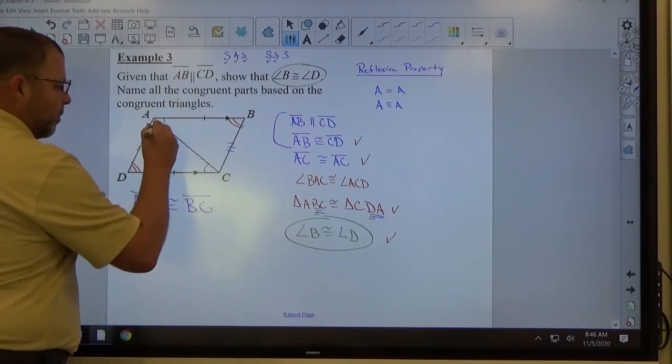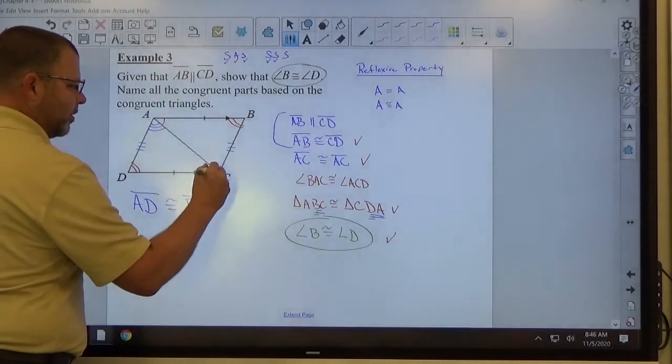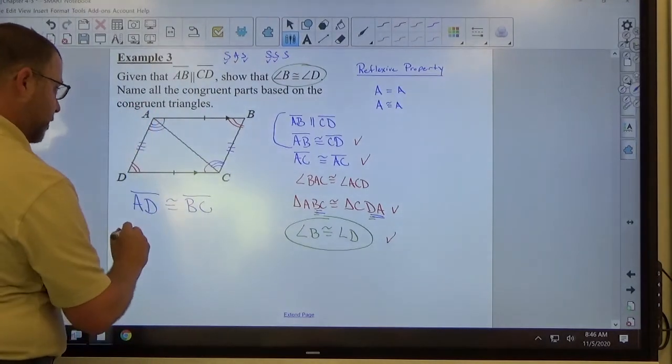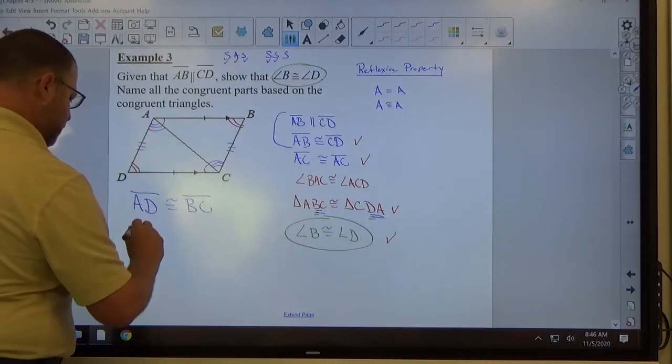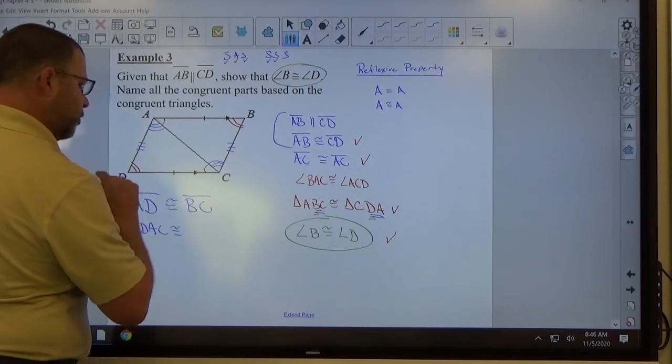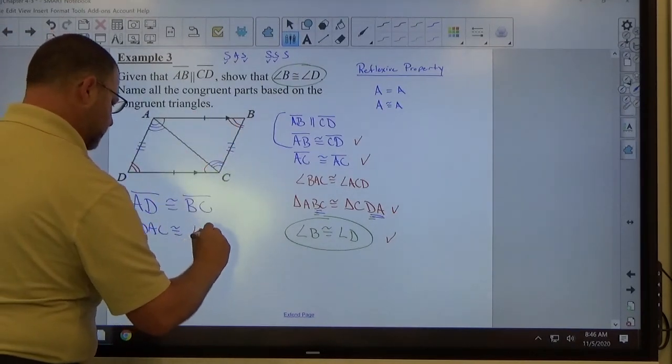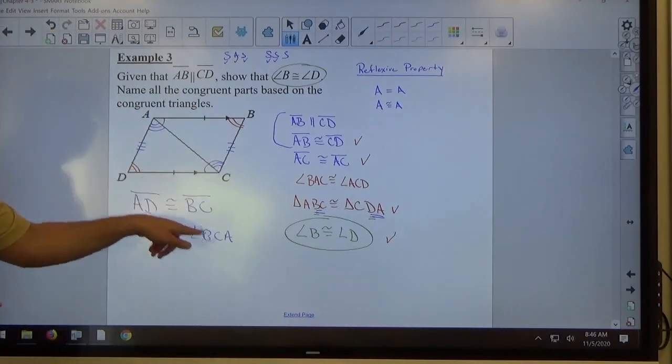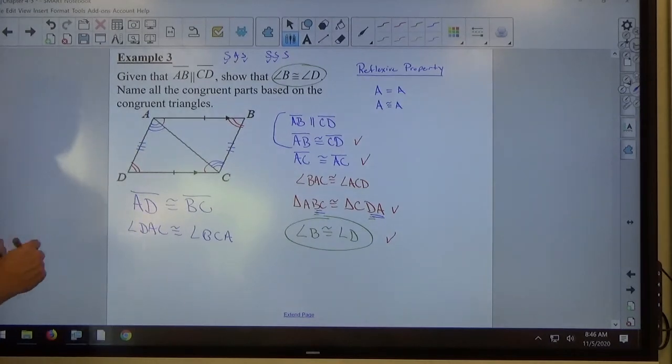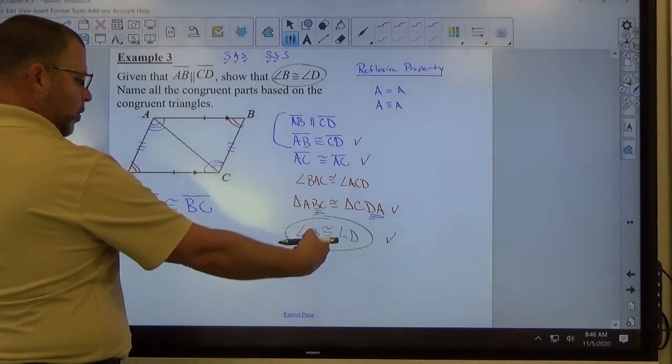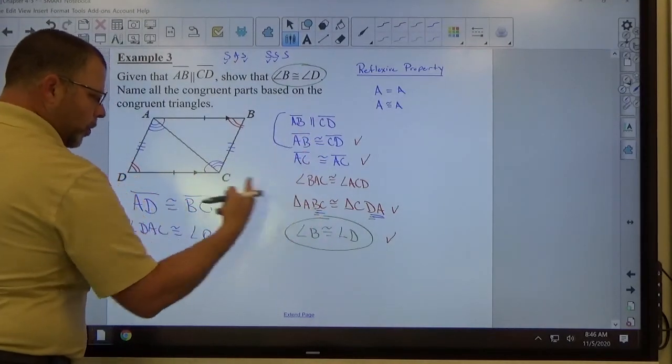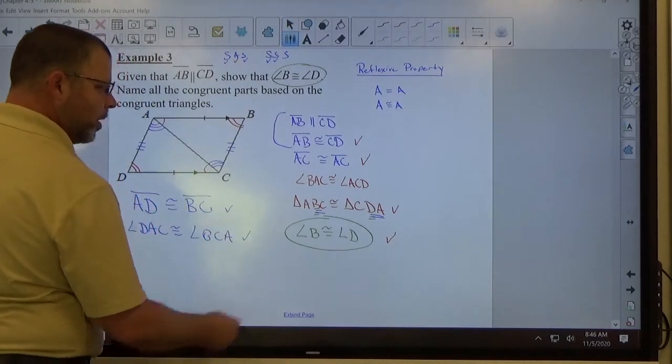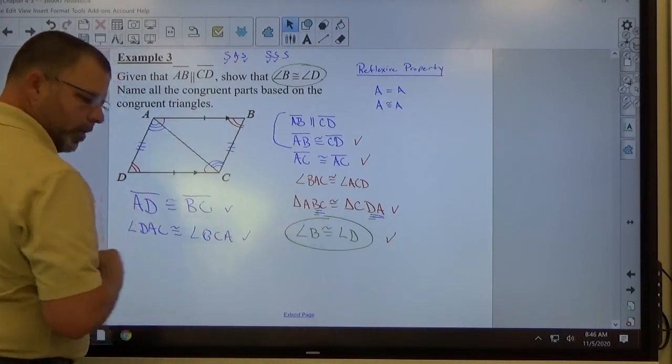All right, and then finally, this angle up here should match this angle down here. And again, those aren't, that's angle A, but it's up where multiple angles are. So I'm going to say angle DAC is congruent to angle BCA. You can also go ACB. It doesn't matter what order you go in, as long as C is in the middle, as long as A is in the middle. So they're showing that B is congruent to D, and then all the corresponding pieces congruent. There should be a total of six, three sides, three angles. There's side, side, side. There's angle, angle, angle.